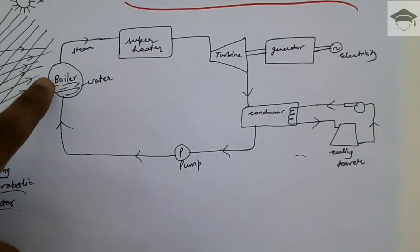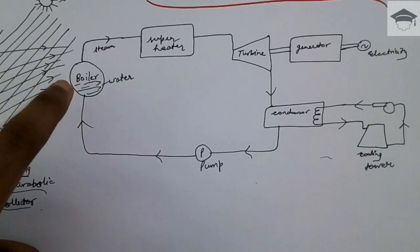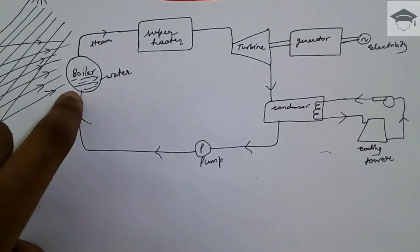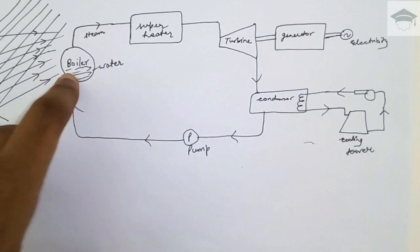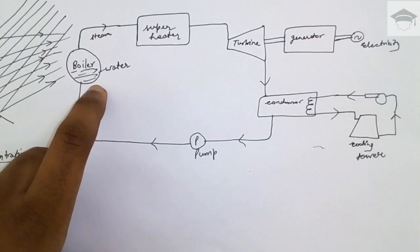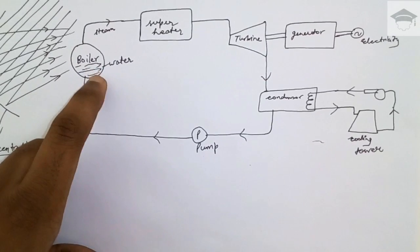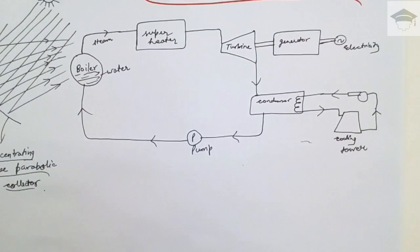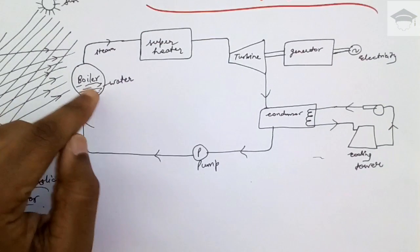This boiler takes the sun rays energy. The temperature of the water rises. When sufficient temperature is reached, the water turns into steam. This steam is made to pass through the superheater.